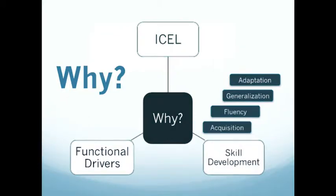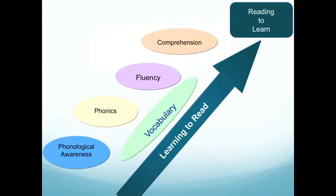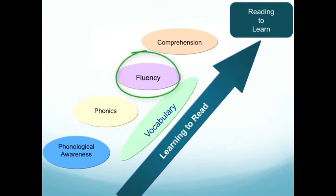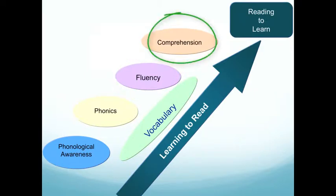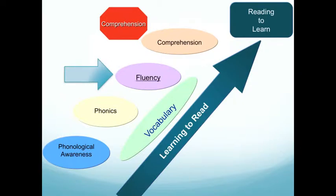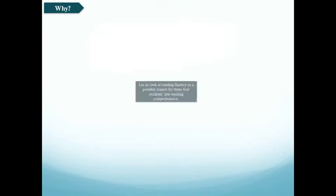Now let's go back to our example, which we know is in the area of reading. Reading progresses along a very particular process — from first being able to play with sounds within words, to linking letters to sounds, to reading words fluently, and finally to being able to comprehend written text — all the while, vocabulary skills are helping us move along this pathway. If we look at our students, we know they are faltering in reading comprehension. Given how skills are acquired, our hypothesis is that they may be breaking down in the area of reading fluency.